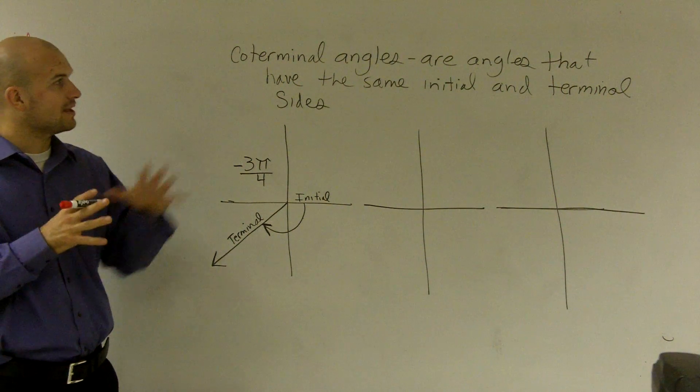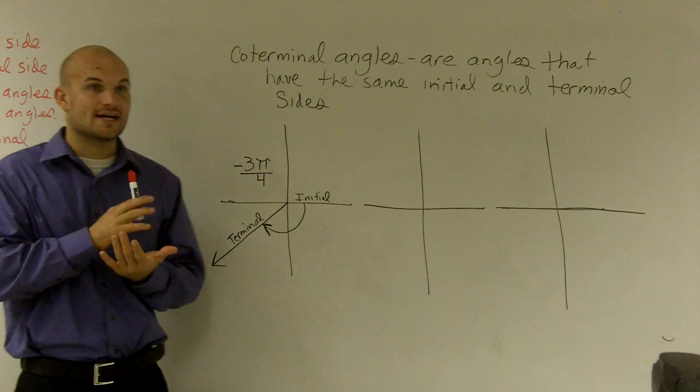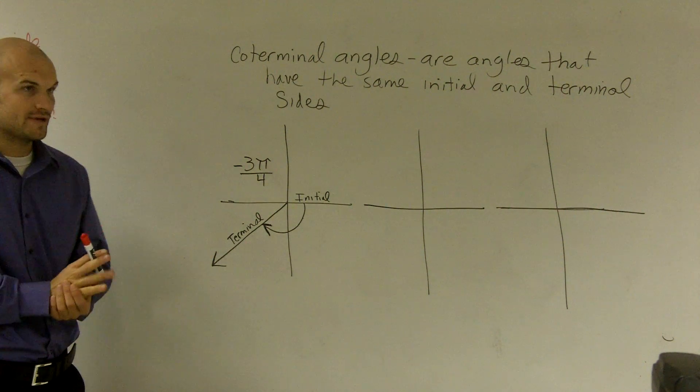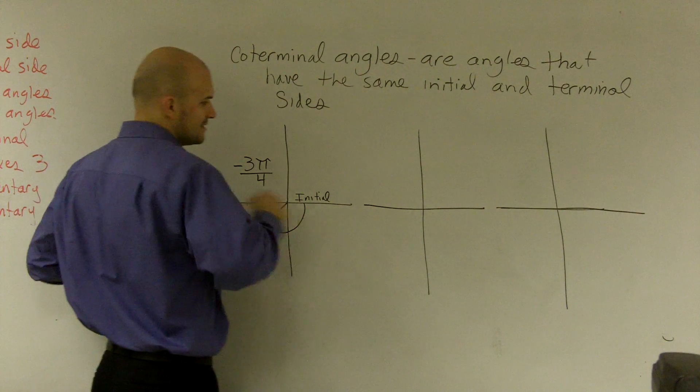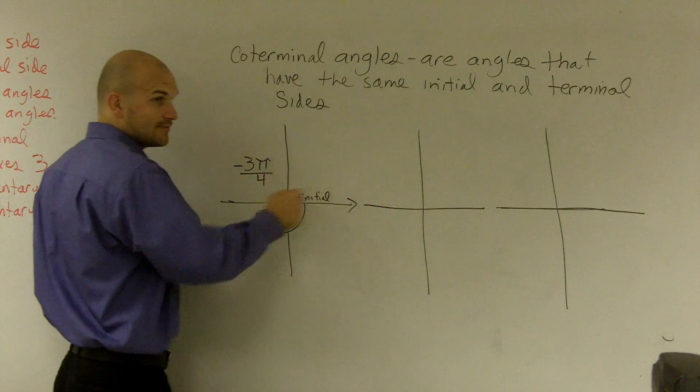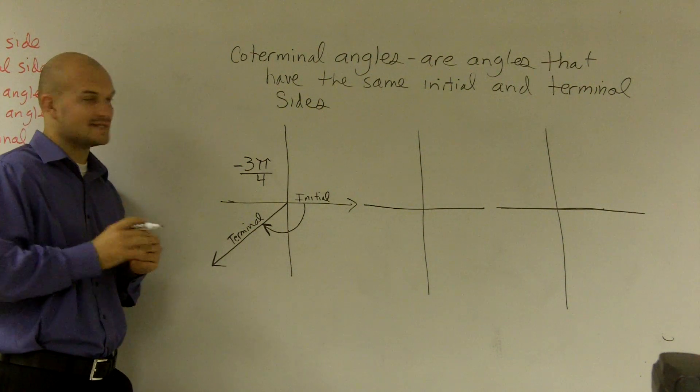So if you guys remember, coterminal angles are angles that have the same initial and terminal side. So if you guys look at it, remember our initial side is right here. And our terminal side is going to be where our angle ends on.